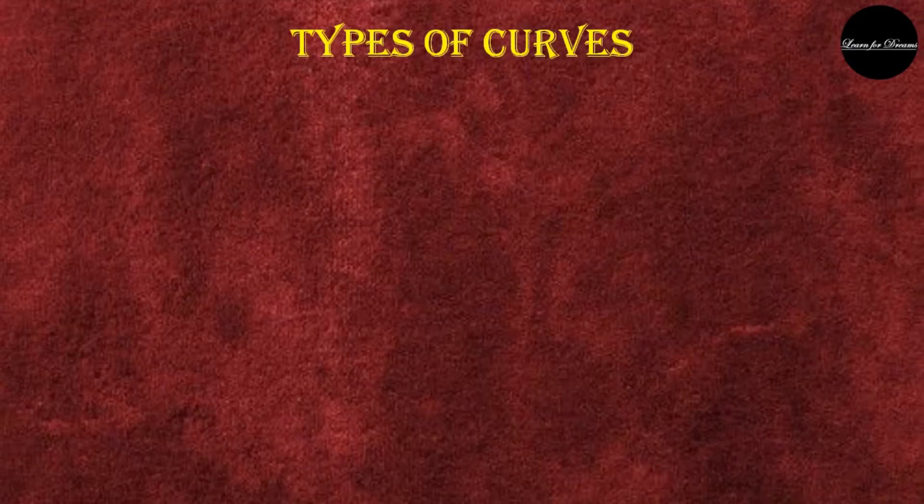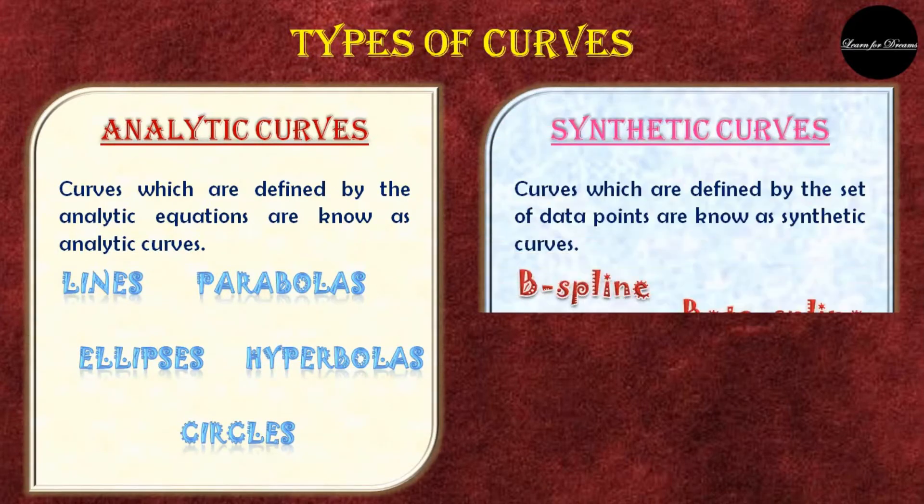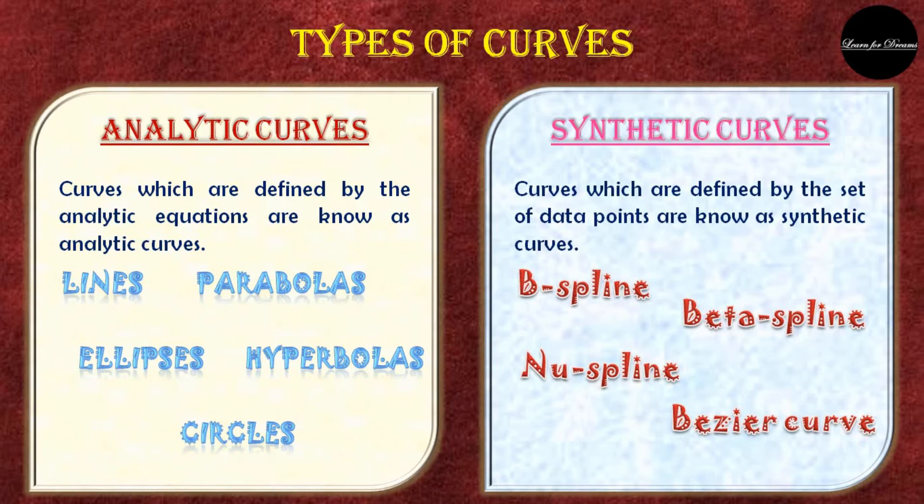Let's have a glance at the types of curves. There are two types of curves: analytic curves and synthetic curves. Curves which are defined by the analytic equations are known as analytic curves. Curves which are defined by the set of data points are known as synthetic curves.